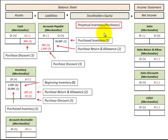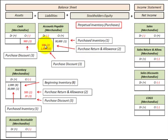Let's say we purchase some inventory on account, so we credit accounts payable by $30,000 and the corresponding debit entry increases inventory by $30,000. We're also sitting with a $2,000 beginning balance in inventory. For a purchase return and allowance where we return $500 of merchandise, we debit accounts payable by $500 and the corresponding credit entry reduces inventory by $500.